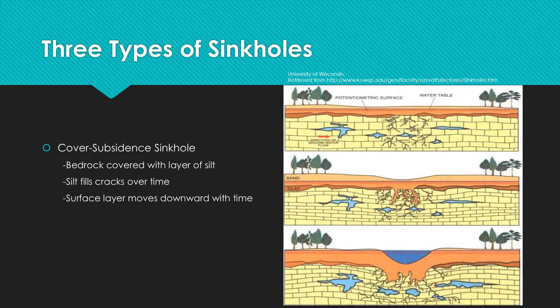A cover subsidence sinkhole is formed when a layer of silt covers the bedrock. As shown in the diagram, silt sifts through the crevices eroded in the bedrock. As the silt moves, it erodes minerals along the way. The gradual depression of the ground where the sinkhole is forming can be observed.